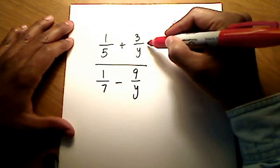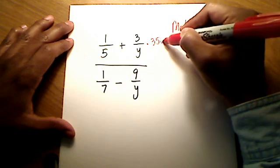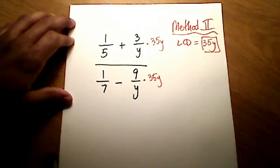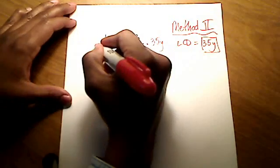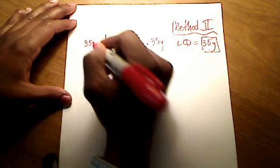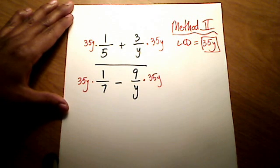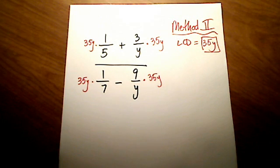So, what I'm going to do is I'm going to multiply every one of these fractions by that LCD of 35y. So, even these guys over here get multiplied by the LCD. And in doing so, watch, I'm going to be able to jump straight to the answer. This is pretty cool.